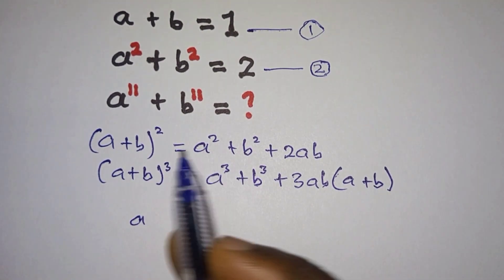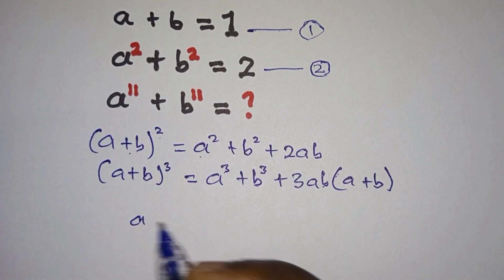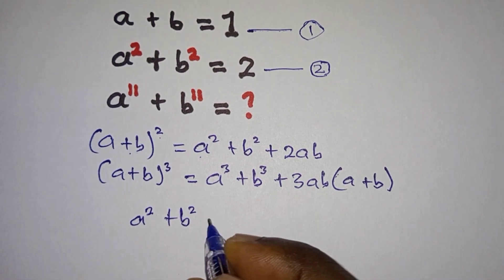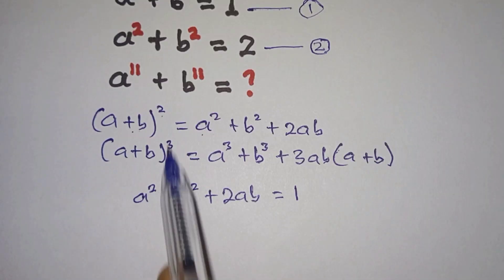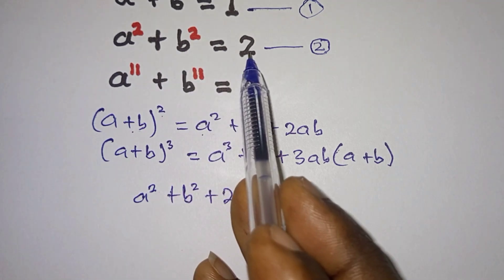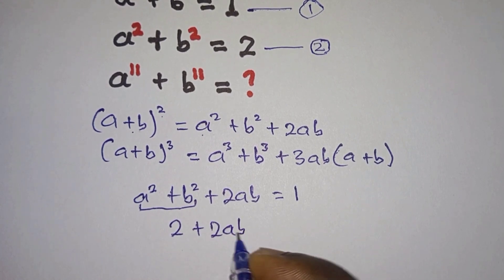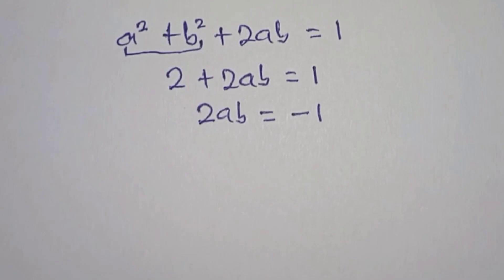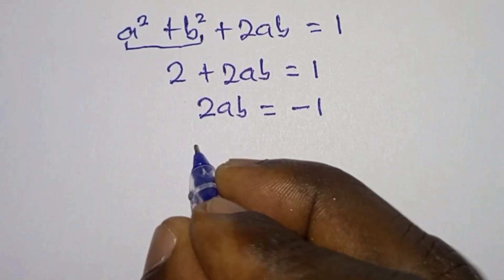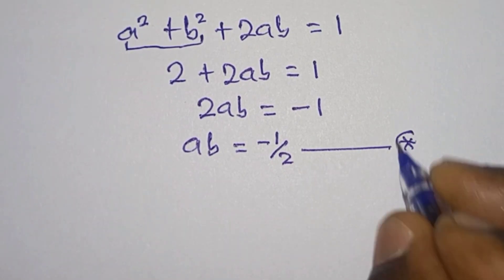Let's go ahead and square each side of equation 1. So we have (a plus b) squared equal to 1 squared. That gives us a squared plus b squared plus 2ab is equal to 1. From equation 2, a squared plus b squared is equal to 2, so we have 2 plus 2ab equals 1, which implies 2ab equals negative 1. Dividing each side by 2, we get ab equals negative 1 half. We'll call this equation star.